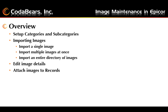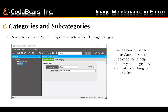Once you've imported and added them to E10, the first step is to set up our categories and subcategories. We're going to navigate to System Setup, System Maintenance, and select Image Category. The categories are basically used to help identify and group your images into easily manageable searches, so you're not searching through hundreds or thousands of images when trying to find one to attach to a record.